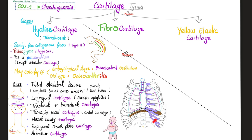Thoracic wall cartilages — all of these costal cartilages are hyaline. Nasal cavity cartilages are hyaline. The epiphyseal growth plate is hyaline. And the articular cartilages are also hyaline.